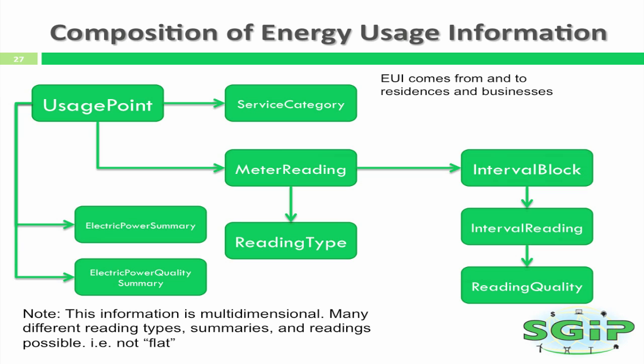One of the key central points is the usage point. Energy usage occurs at a usage point and consists of information on the interval data or the readings — the meter readings. There's a flow through to the meter reading, which gets into interval blocks and readings. That usage point and meter reading is characterized by the type of reading it is. In addition to this energy usage information by interval blocks, there's also the ability to report summary information that may be very important to a facility manager or residential consumer who wants to view the information in aggregate at a top level.